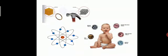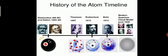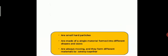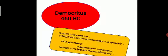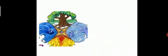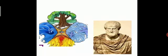This is the timeline for the history of the discovery of the atom. The first who came was Democritus. He gave the idea of an atom first. He said atoms are small hard particles, made of a single material formed into different shapes and sizes, they are always moving, and they form different materials by joining together. This was given by Democritus in 460 BC.